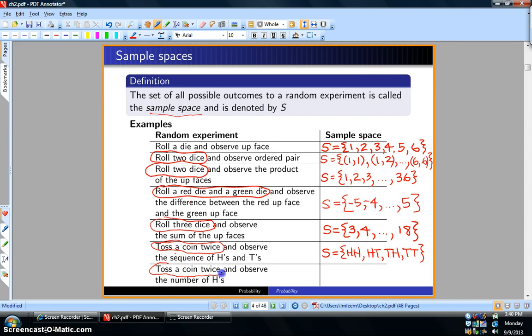Finally, for the last one, toss a coin twice and observe the number of heads. You're tossing a coin twice, but this time you either get zero heads (tails-tails), one head (heads-tails or tails-heads), or two heads.